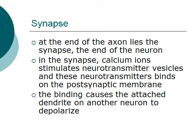At the end of the axon lies the synapse — the end of the neuron. At the synapse, calcium ions stimulate neurotransmitter vesicles, and these neurotransmitters bind to the postsynaptic membrane. This binding causes the attached dendrite on another neuron to depolarize.